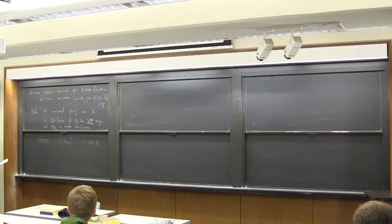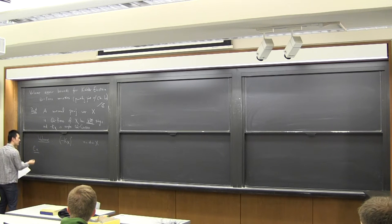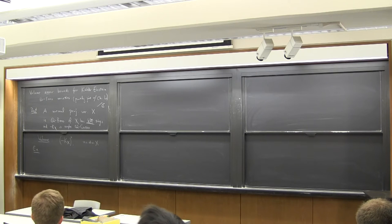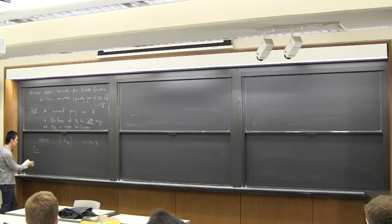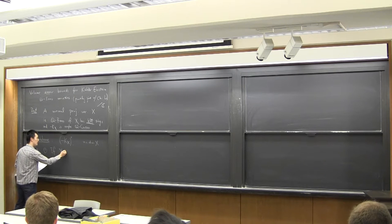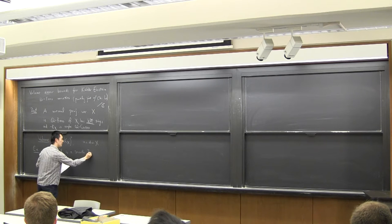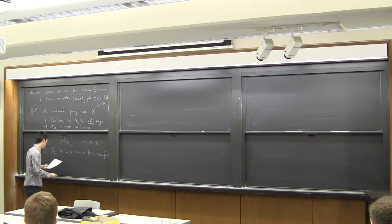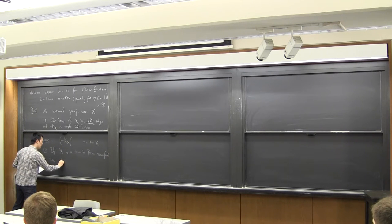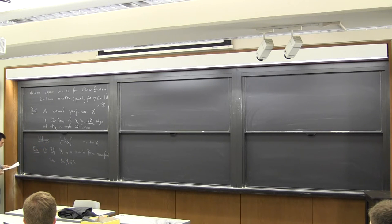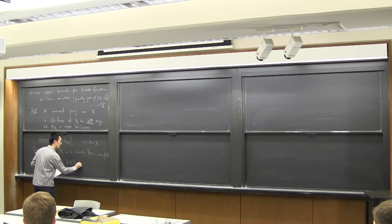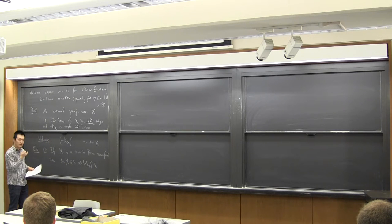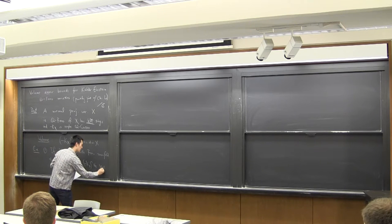Let's review some known results in the study of Q-Fano varieties or Fano manifolds without any geometric condition like Kähler-Einstein. If X is a smooth Fano variety or manifold, and the dimension of X is 1, 2, or 3, then we know that the volume is at most the volume of P^n, which is (n+1)^n.